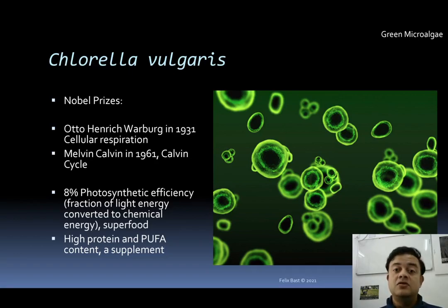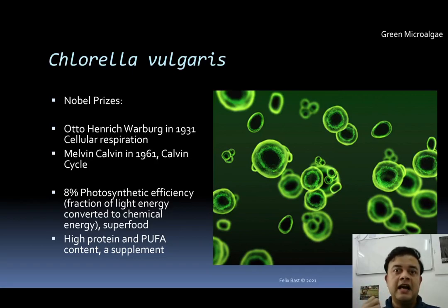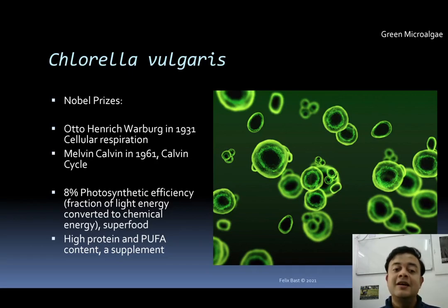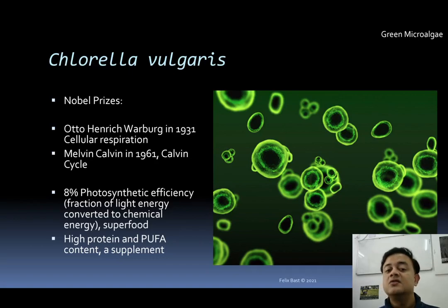Chlorella is also really interesting because its photosynthetic efficiency is very high — around 8%. This number indicates the fraction of light energy converted into chemical energy: how much energy from sunlight is converted and stored through carbon fixation into sugar molecules. Eight percent may seem small, but it is actually a very high number compared to any other photosynthetic organisms, including cyanobacteria and plants. It is among the highest photosynthetic efficiencies known.